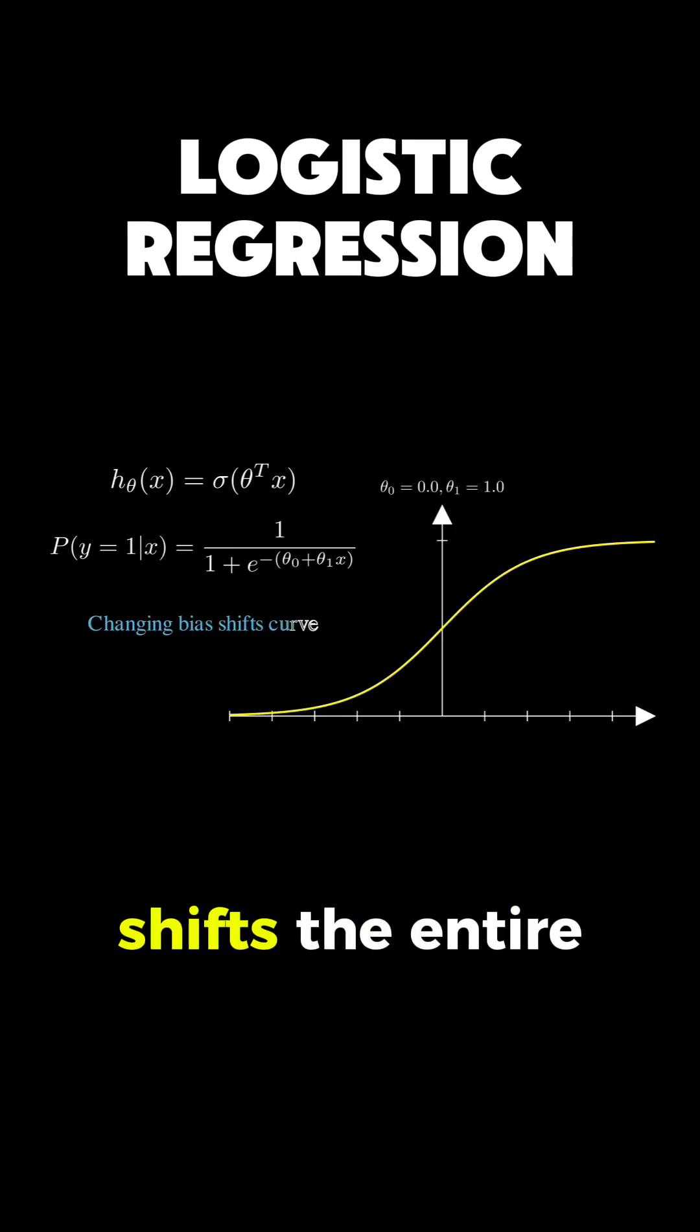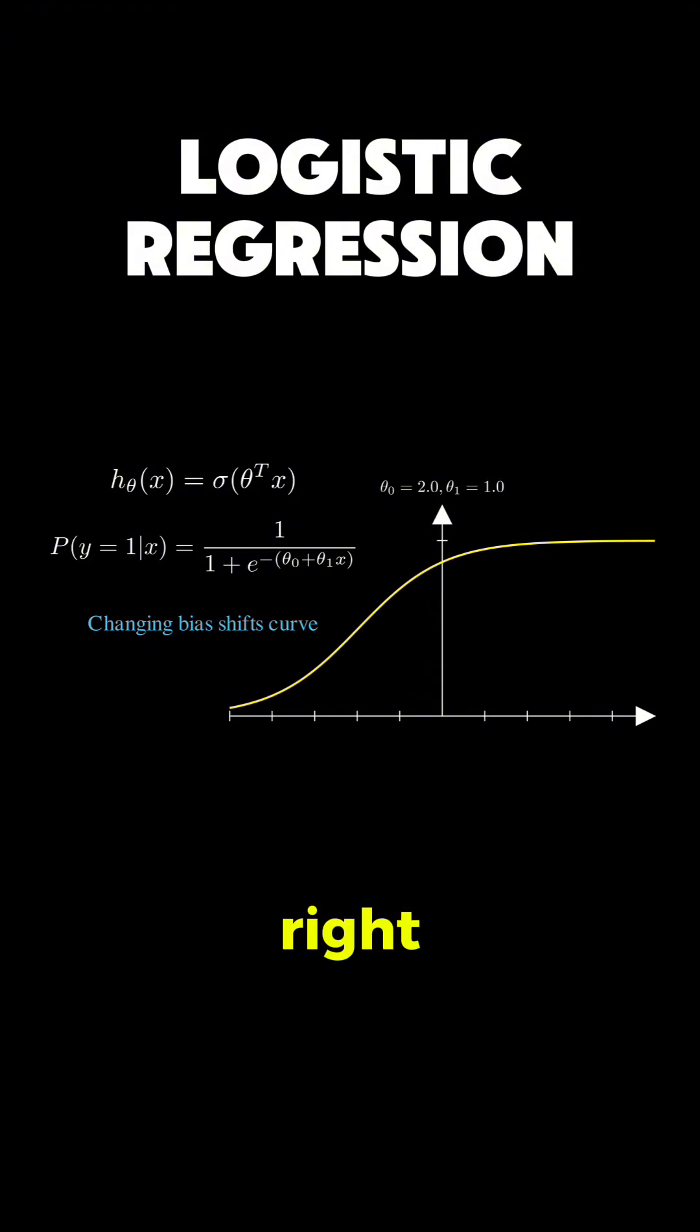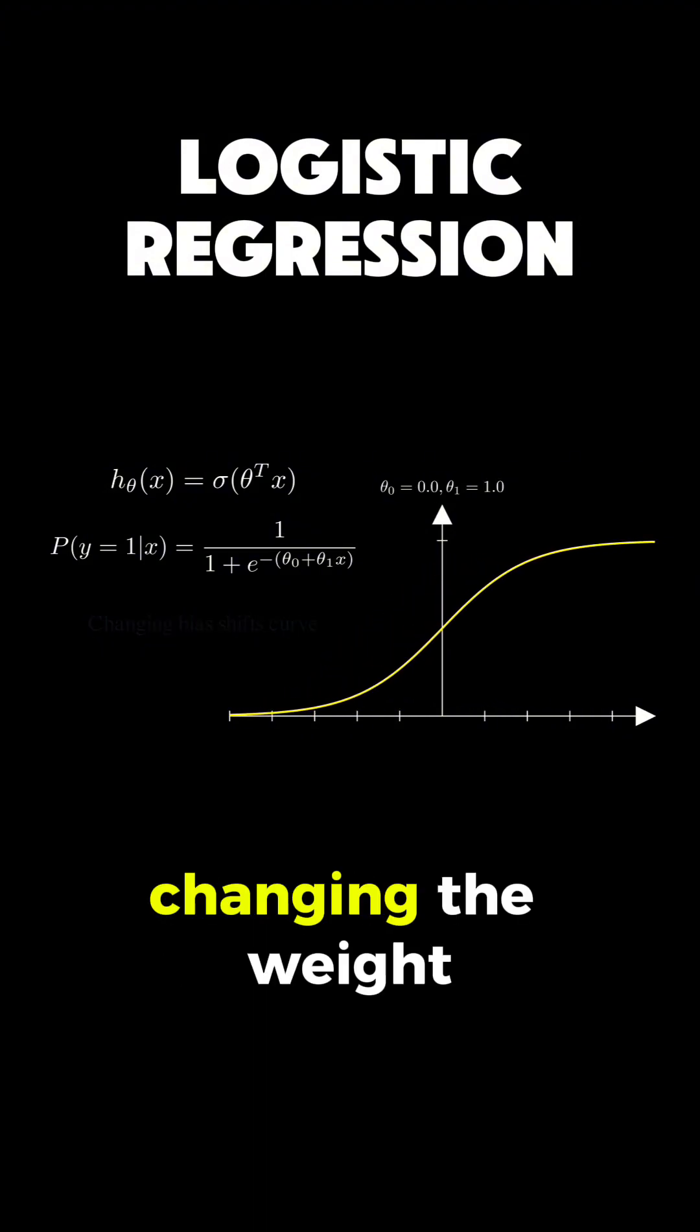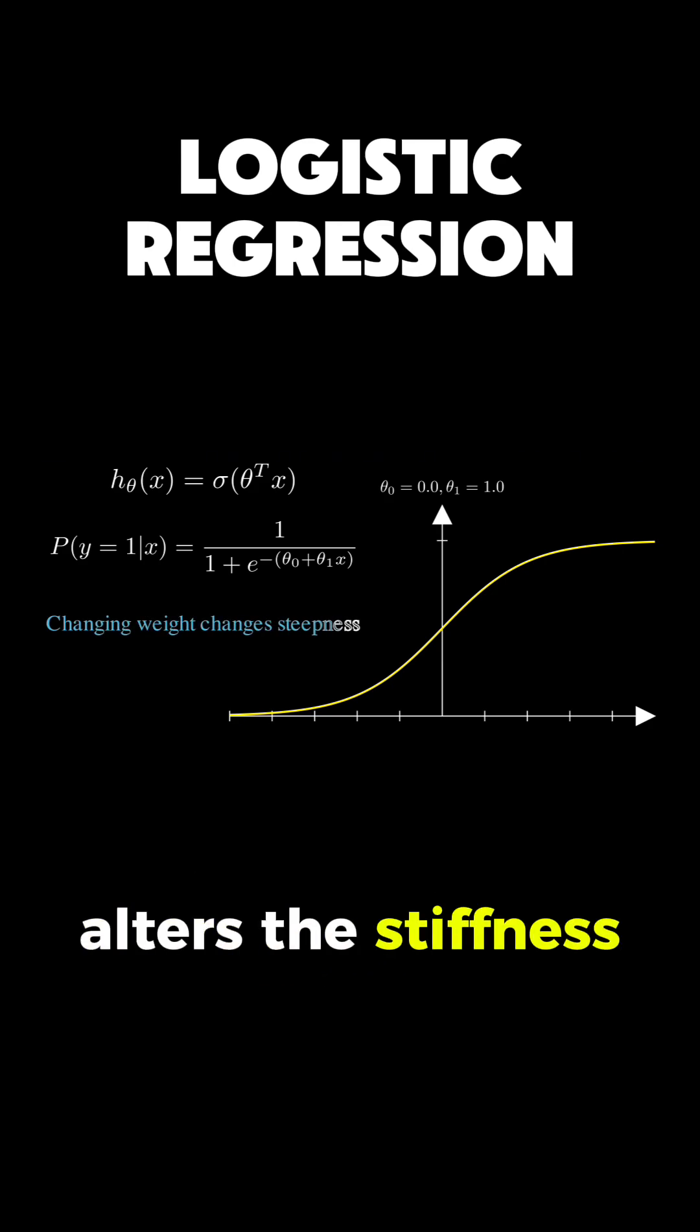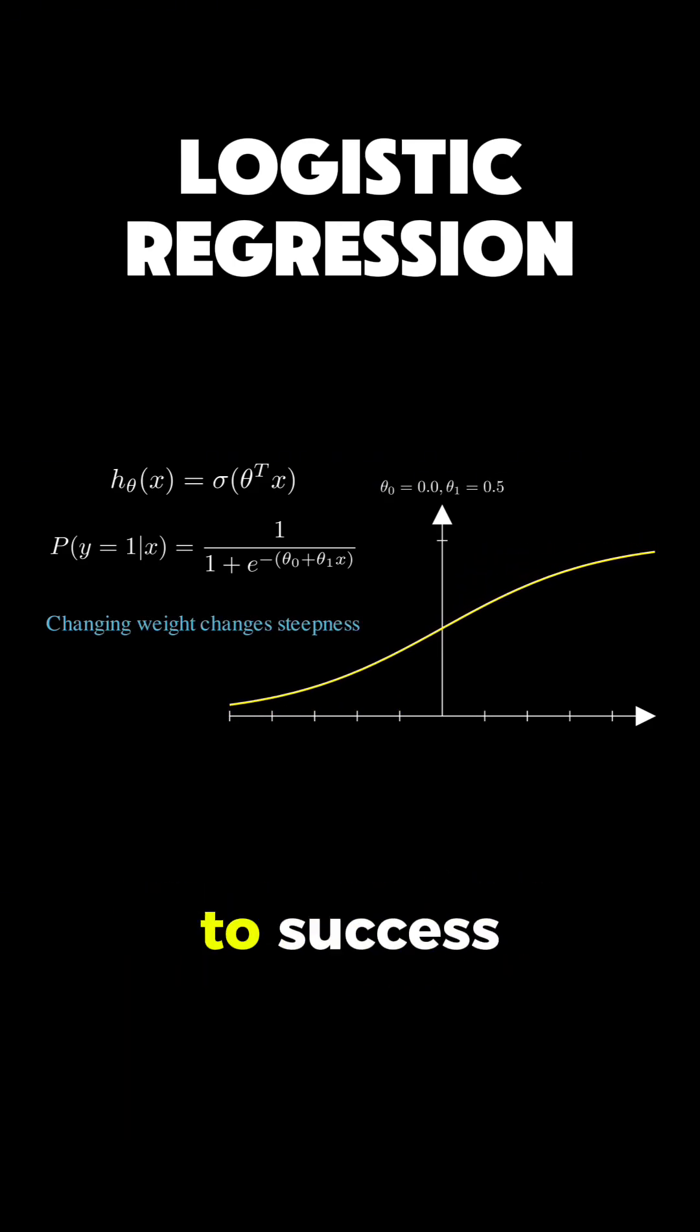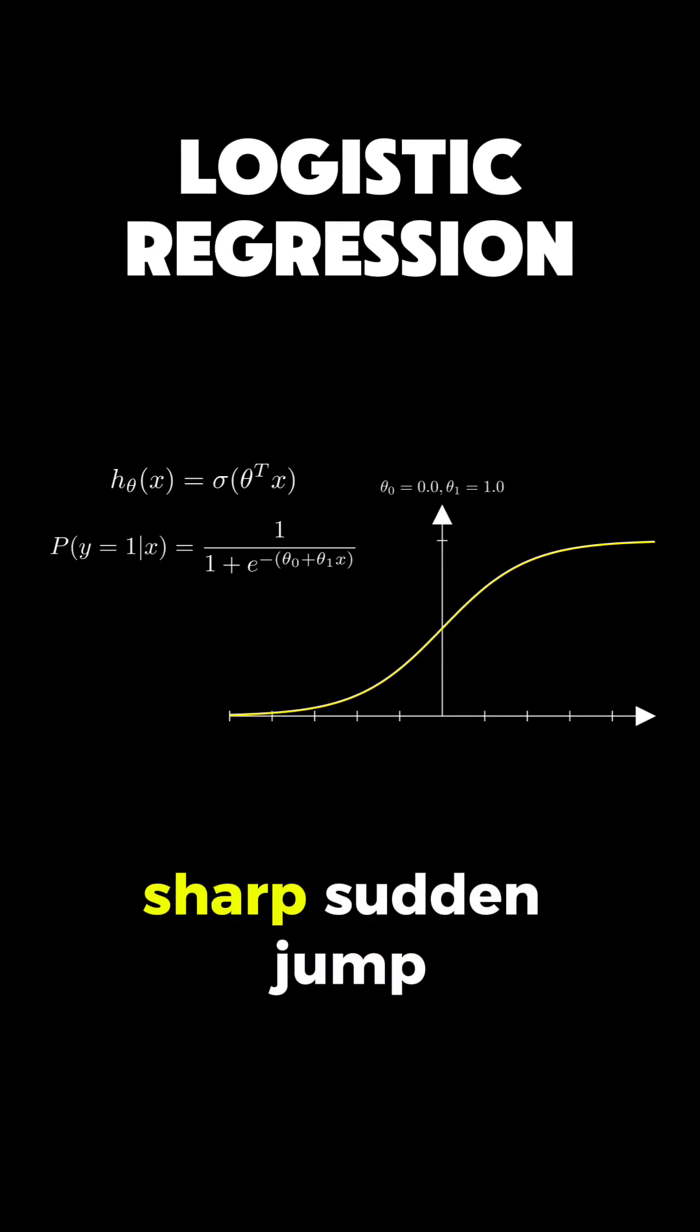Changing the bias shifts the entire curve left or right, effectively changing the threshold required to pass. Changing the weight alters the steepness, determining whether the transition from failure to success is a gradual uncertainty or a sharp sudden jump.